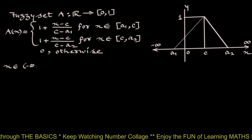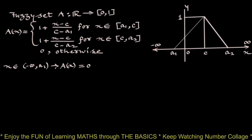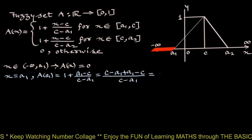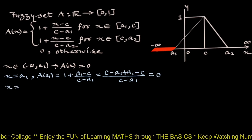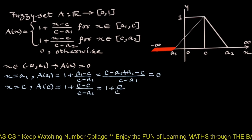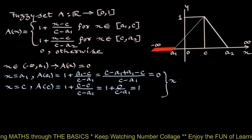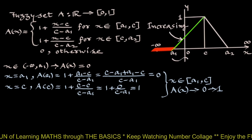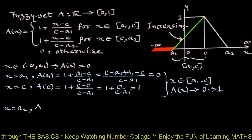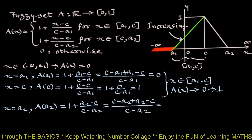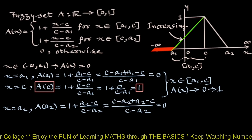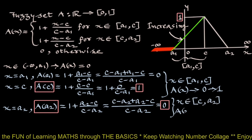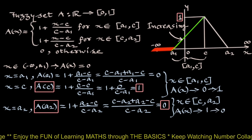The graph of this fuzzy set looks as follows. For x in (minus infinity, a1), A(x) is 0. At x equals a1, the numerator is 0 so A(a1) equals 0. At x equals c, A(c) equals 1. So for x between a1 and c, A(x) increases from 0 to 1. At x equals a2, the numerator is 0 so A(a2) equals 0. Since A(c) is 1 and A(a2) is 0, for x between c and a2, A(x) decreases from 1 to 0.